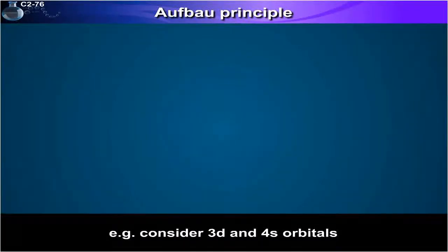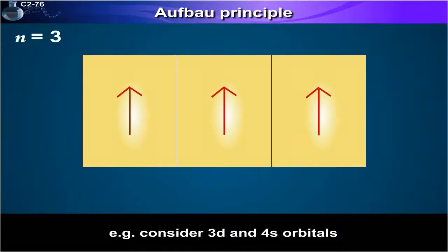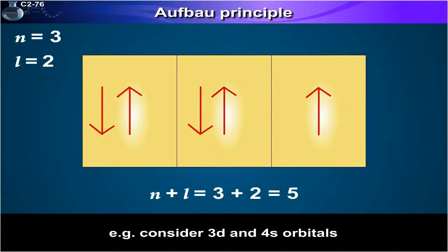For example consider 3d and 4s orbitals. For 3d, n is equal to 3 and l is equal to 2. Hence n plus l is equal to 3 plus 2 is equal to 5.